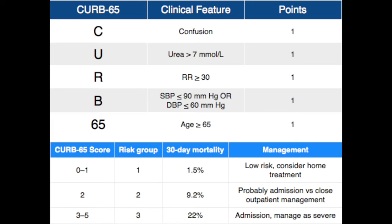Next is CURB-65 criteria for pneumonia. C stands for confusion, U stands for uremia, R stands for respiratory rate as in tachypnea, B stands for blood pressure if they're hypotensive, and 65 is for age 65 or older. If the score is 2 or more you want to hospitalize and treat the pneumonia inpatient. Usually first-line inpatient pneumonia treatment is a fluoroquinolone, whereas outpatient it depends — for typical pneumonia it'll be amoxicillin and for atypical it'll be azithromycin.